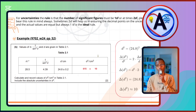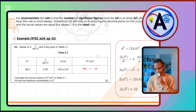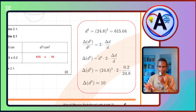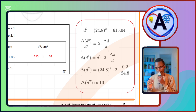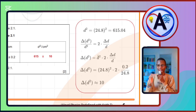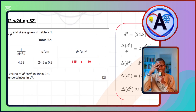Next, Winter 2024 Question Paper 5.2: we're given values of θ and 1/sin²θ and asked to calculate and record values of d² and include the absolute uncertainties in d². Square the value of d to complete the table — you get d² = 615.04. Since x = d² = y^n, use Δd²/d² = 2 × Δd/d, so Δd² = d² × 2 × Δd/d. Substituting 24.8² × 2 × 0.2 / 24.8 gives approximately 10, rounded to 1 SF.